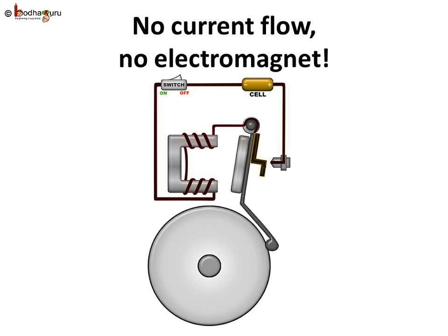The coil is no longer an electromagnet. As we know, it's the flow of the current that gives the coil its magnetic power. So, it no longer attracts the clapper.